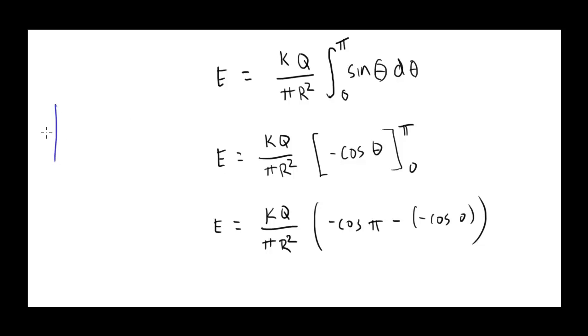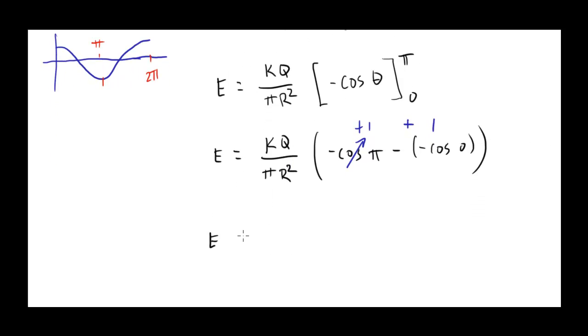So, this is going to be the negative of negative 1. So, this here is positive 1 minus negative of cosine of 0. Cosine of 0 is 1. So, this is minus 1 minus minus 1 is plus 1. So, what do I get? This whole thing turns out to be 2. And so, I can go ahead and finish by saying e equals 2, k, q over pi r squared. And there we go.